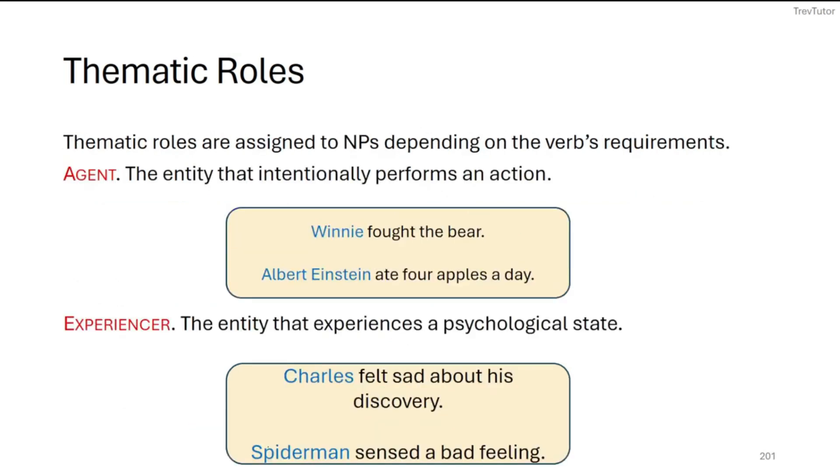So these are the different thematic roles that we can assign to NPs. The first one is an agent. These are things that intentionally perform actions. Typically, they're at the beginning of a sentence as a subject, but they can be in a passive by-phrase as well. So for when he fought the bear, Winnie is an agent because Winnie is the thing that can initiate the action of fighting. In the case of Albert Einstein ate four apples a day, we have our eater, Albert Einstein, who can initiate the action of eating.